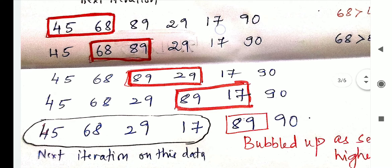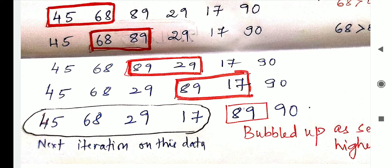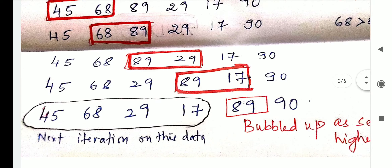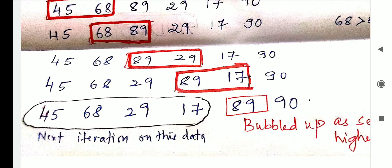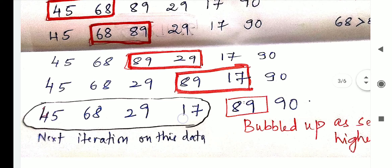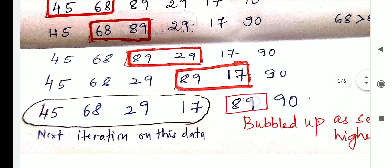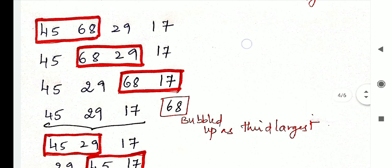In this way, during the second scan — scanning the remaining elements from 45 to 17 — I have bubbled up the second highest element, 89. So: first scan gave us 90 bubbled up, second scan gave us 89 bubbled up. The left out elements are now 45, 68, 29, and 17. Let us go for the next iteration — the third scan. Again from left to right: 45 is compared with 68, since it is lesser, no need to swap.